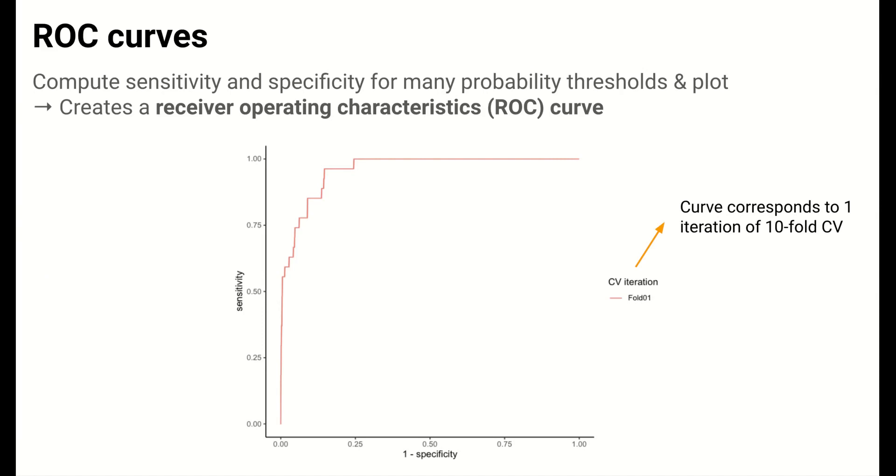Computing sensitivity and specificity at a variety of probability thresholds and plotting the results creates what is known as a receiver operating characteristic, or ROC curve. An example is shown here.